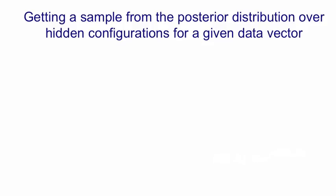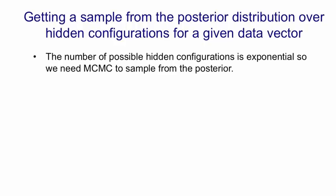What about getting a sample from the posterior distribution over hidden configurations when given a data vector? It turns out we're going to need that for learning.